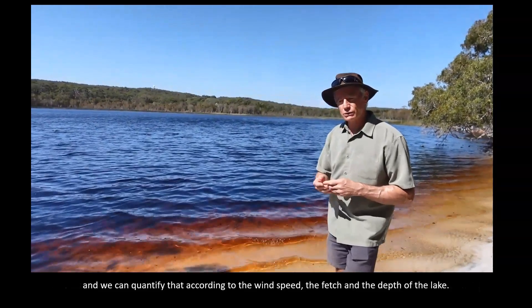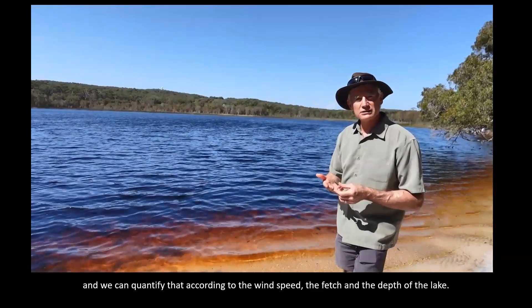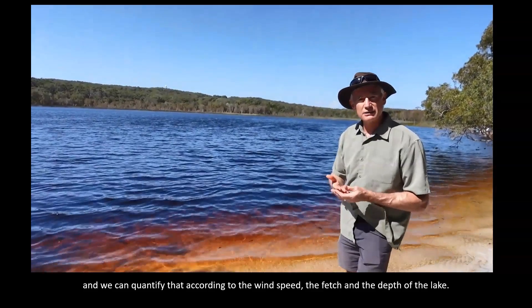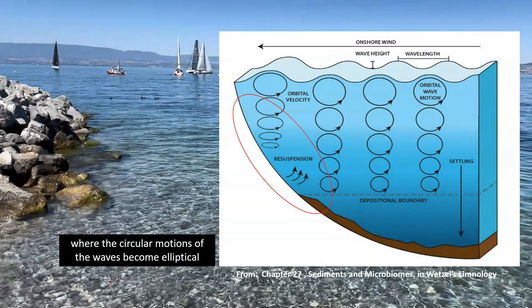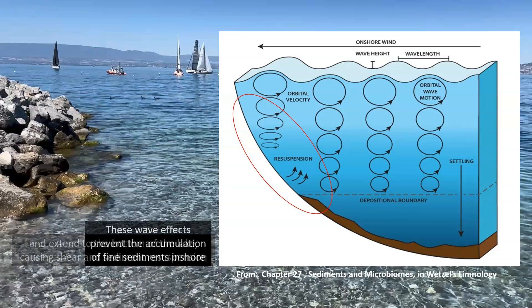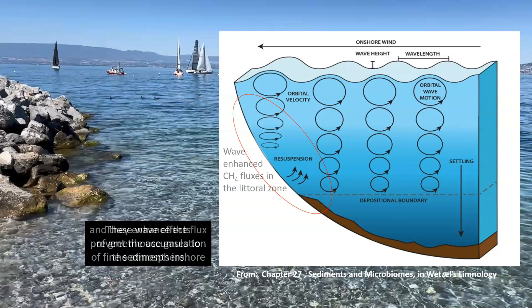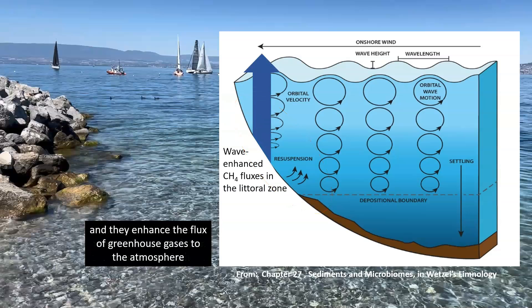We can quantify the waves according to the wind speed, the fetch, and the depth of the lake. Gravity waves are especially important in shallow water where the circular motions of the waves become elliptical and extend to the bottom of the lake, causing shear and sediment resuspension. These wave effects prevent the accumulation of fine sediments inshore and they enhance the flux of greenhouse gases to the atmosphere.